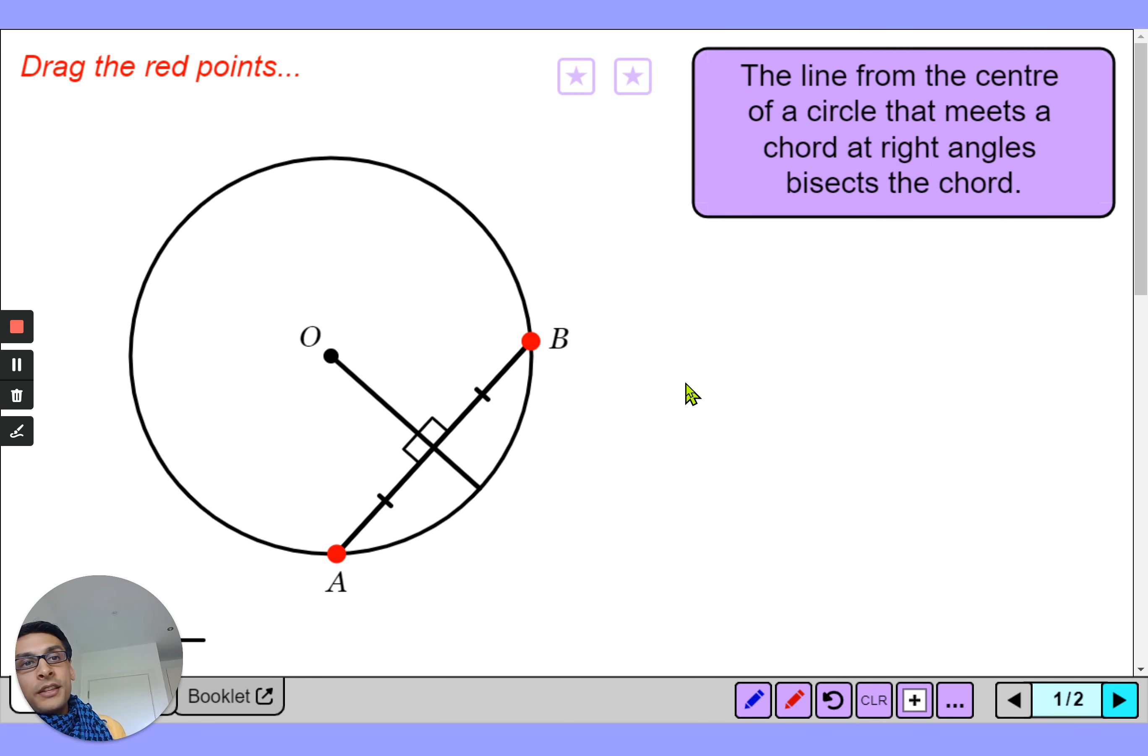So the name of this theorem is the line from the center of a circle that meets a chord at a right angle. Now that's the property we've decided, it has to be at a right angle. If it is at a right angle then it means that this chord has been cut into two exact parts.